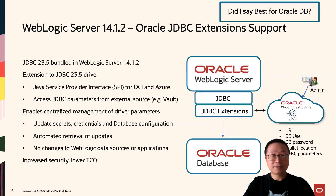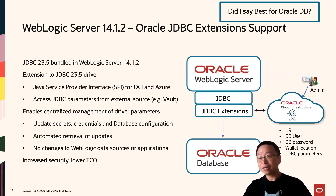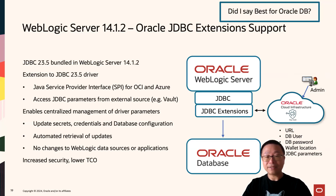Another key feature is the upgraded Oracle JDBC driver 23.5. One benefit is that it includes Service Provider Interface (SPI) functionality that allows externalization of configuration — meaning the URL for a JDBC driver, the username, password, wallet location, and JDBC parameters. This allows you to centrally manage that in a cloud service such as OCI Vault or Azure Vault, making it easy to manage and configure a fleet of WebLogic instances in the cloud, lowering operational friction, increasing security, and reducing TCO.